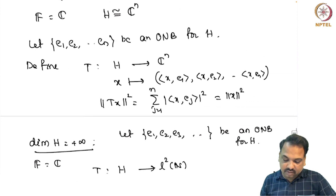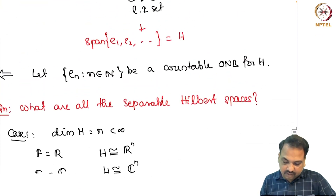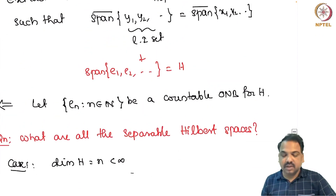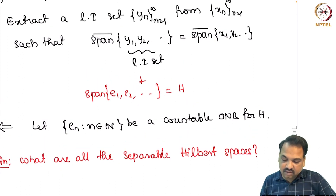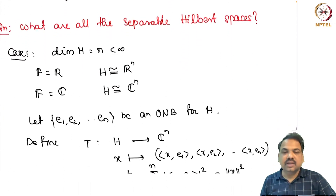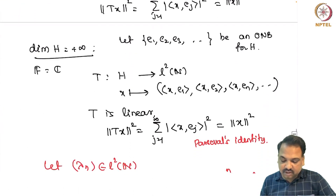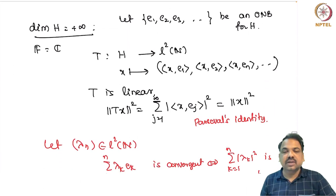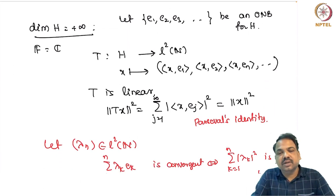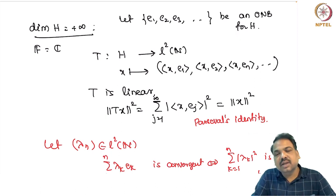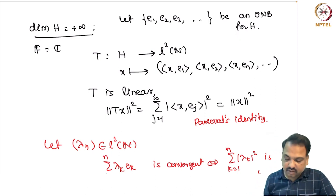So there is no essential difference between H and L2(N). In summary: if H is a finite dimensional separable Hilbert space, it is isometrically isomorphic with F^n where F is the field and n is the dimension of H. When the Hilbert space is infinite dimensional, it is isometrically isomorphic with L2(N). These are the only separable Hilbert spaces; any other separable Hilbert space can be identified with one of these spaces.